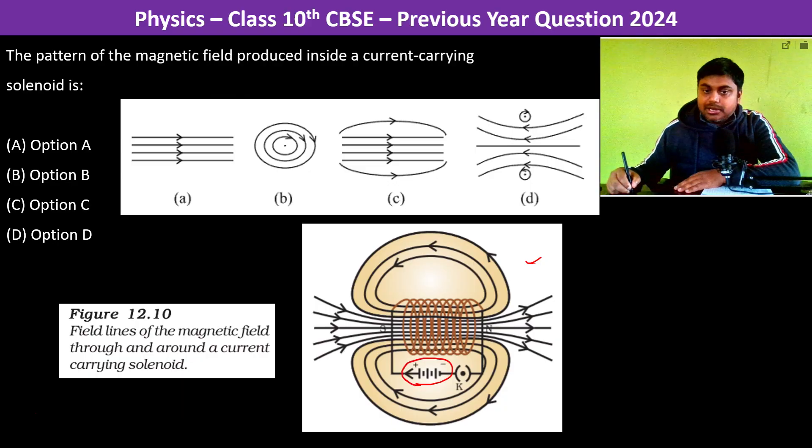Current flows through it and now when the current flows through it, what is the pattern of the magnetic field lines? That is the question.